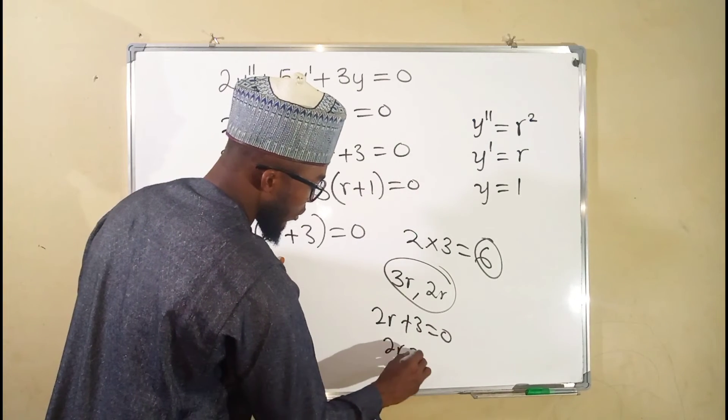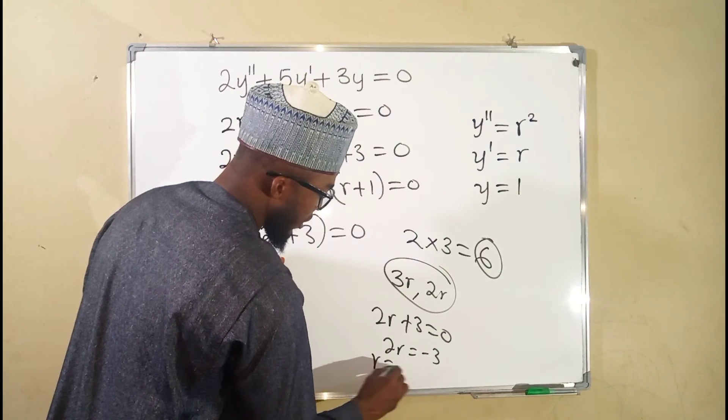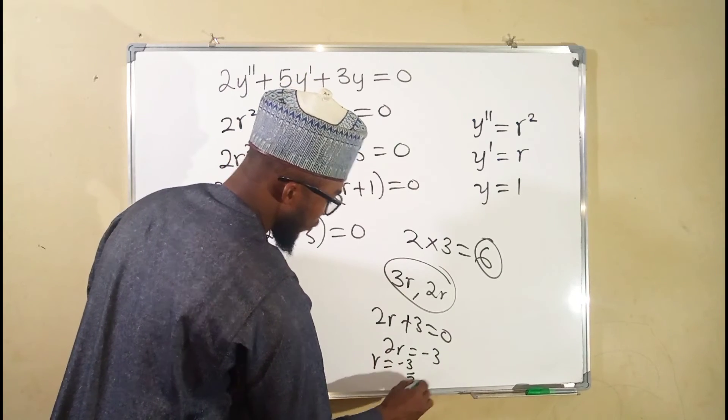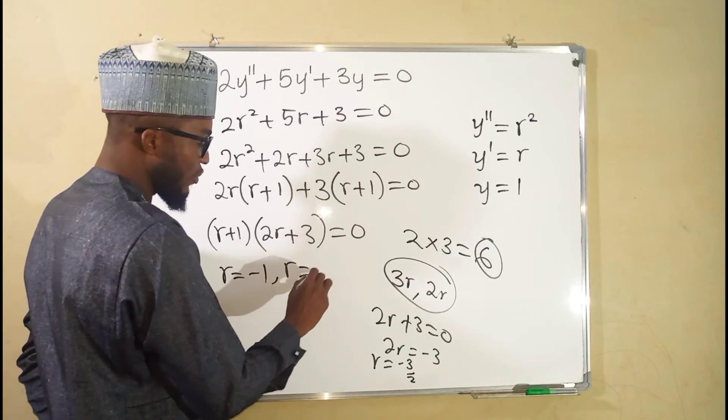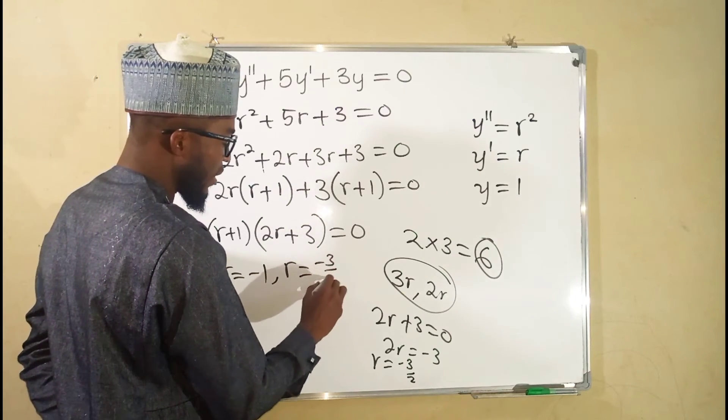And if you set this factor to be equal to 0, this is 2r plus 3 equal to 0, 2r equal to negative 3, and r will be equal to negative 3 over 2.